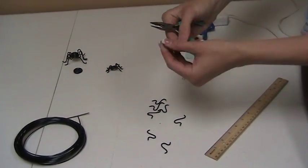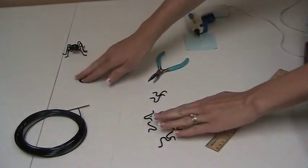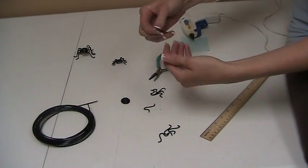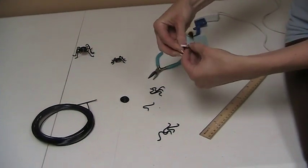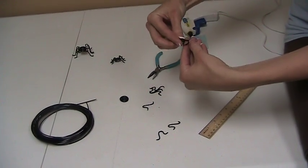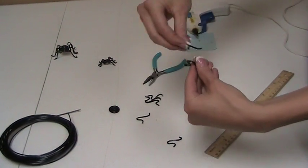Once you have all eight of them bent, then you're going to separate them into two piles of four and find the long end. Just put it on your finger so that all of the long sides are on one side.